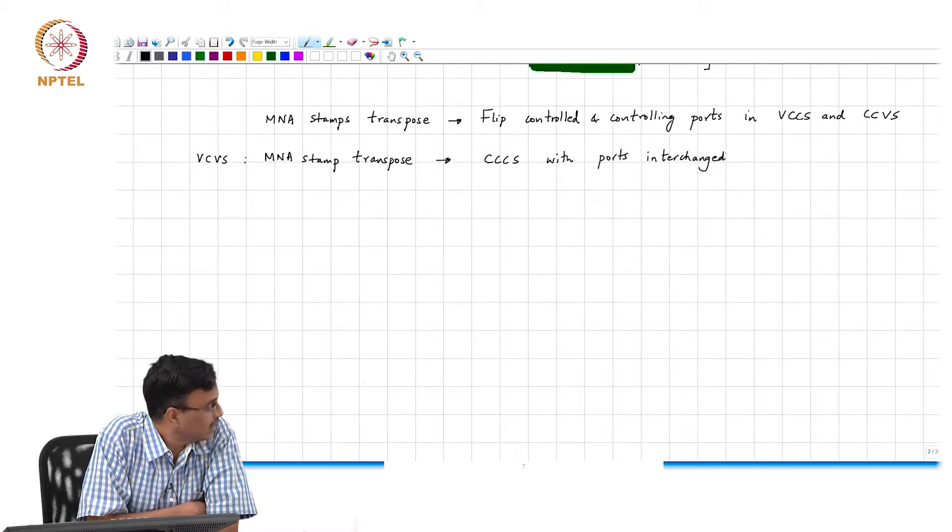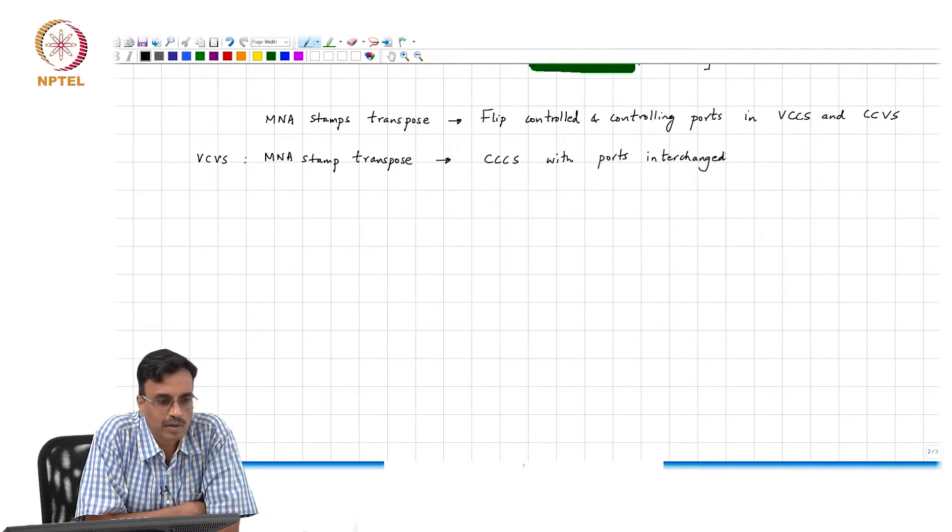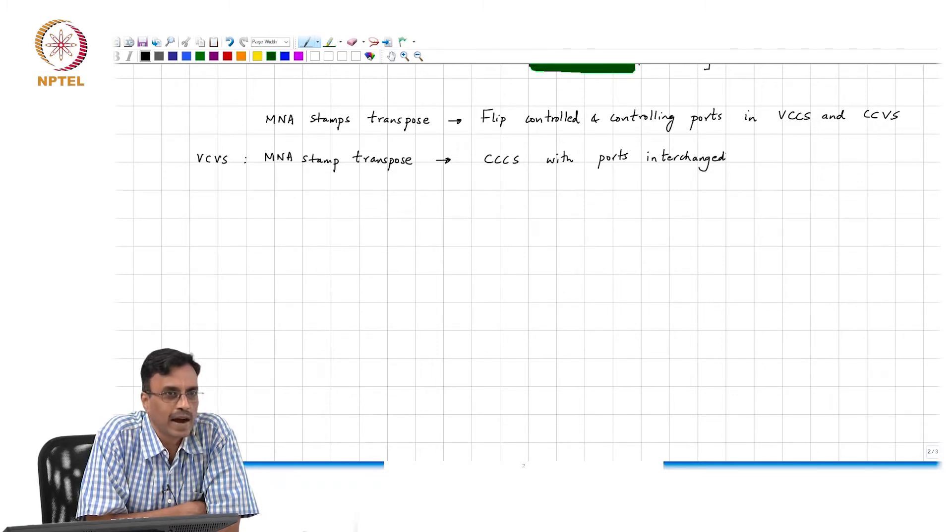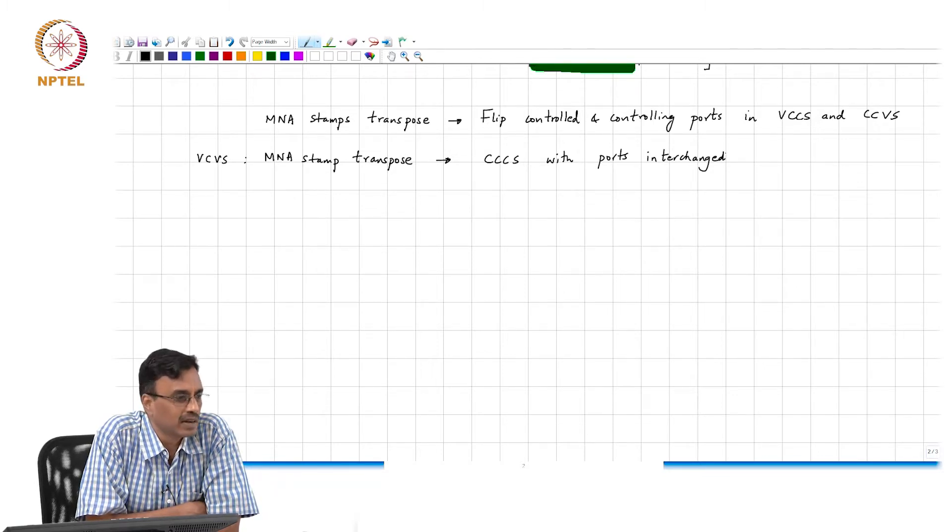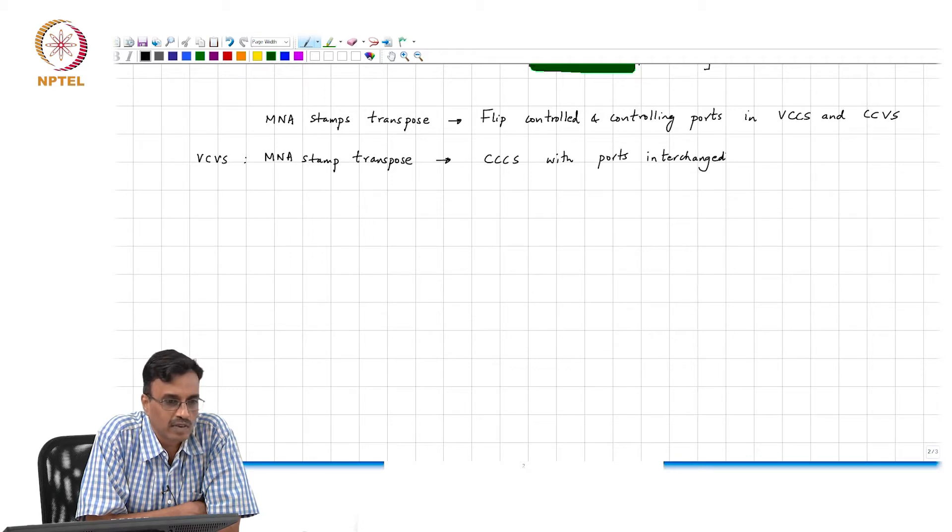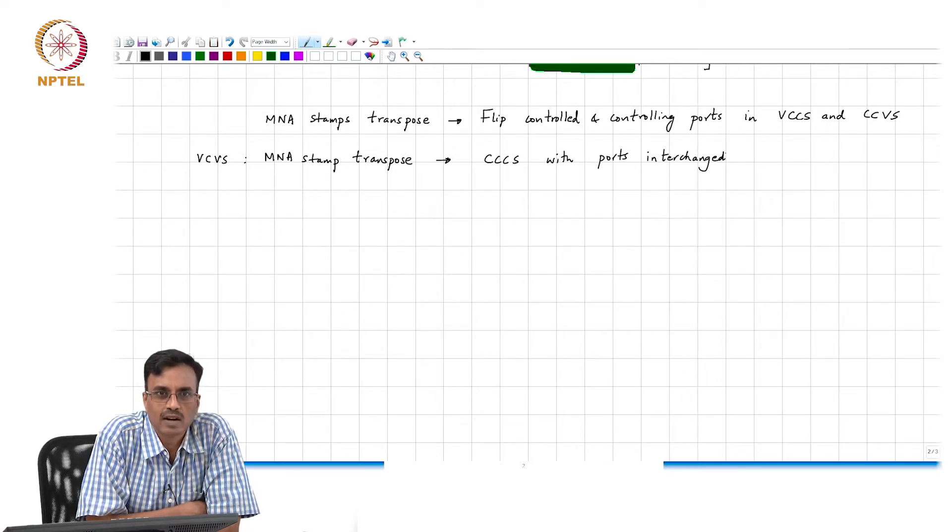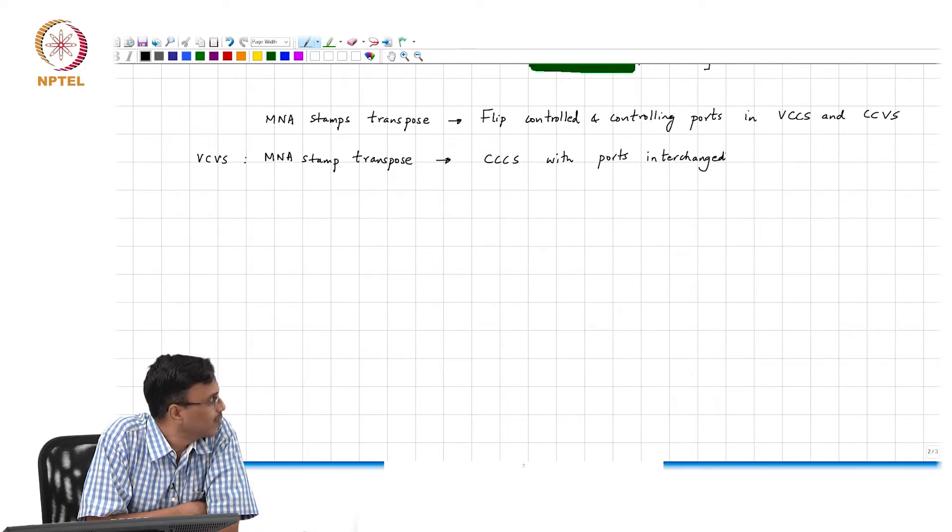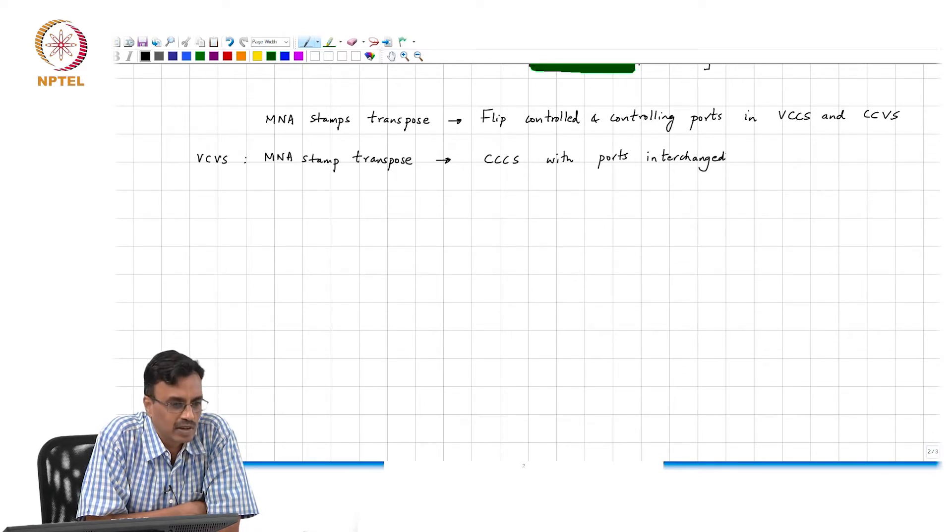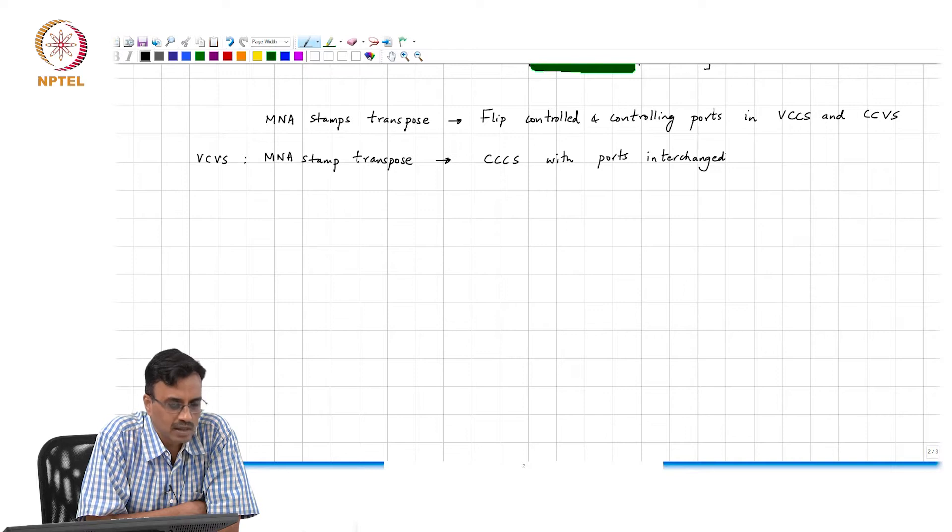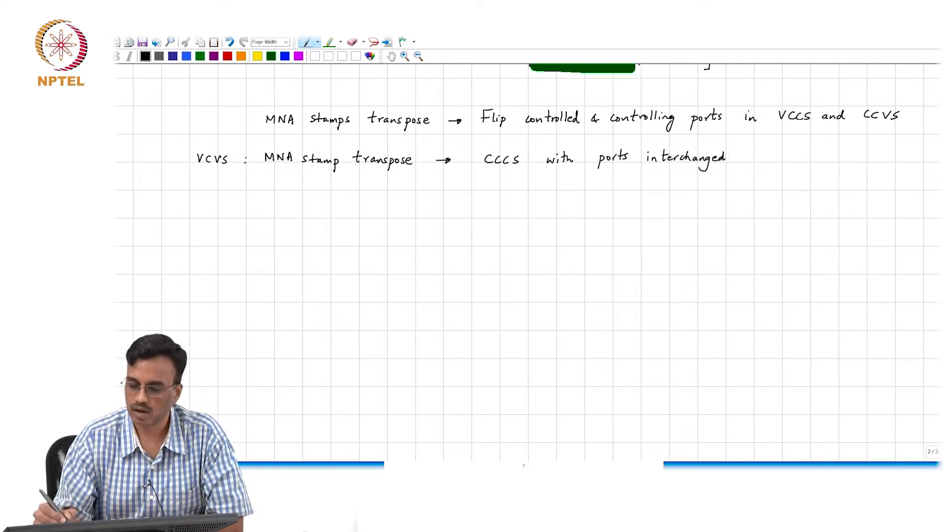We used Tellegen's theorem, right? I don't know about you guys, but the whole thing seems like pulling a rabbit out of a hat. Tellegen's theorem to begin with is not particularly intuitive, especially when applied to other networks. It almost seems like we knew the answer and we were getting it. Fortunately, it is possible to actually derive it from first principles and that is what we are going to do next.